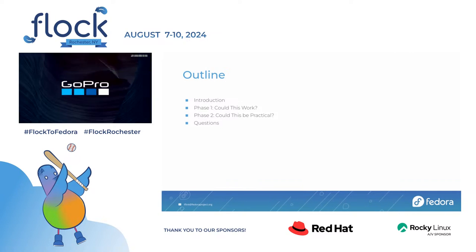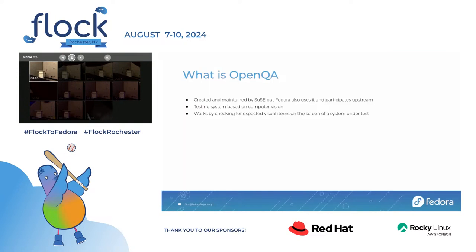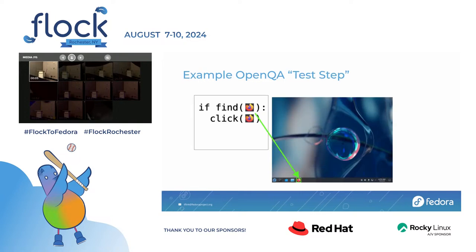What I'm looking to do is give a bit of introduction about how this got started, talk about whether this could actually work and be practical, and leave time at the end for questions. openQA is a system created and still maintained by the SUSE folks, but Fedora has come to rely very heavily on it and we also participate upstream. openQA is a system primarily based on computer vision — the real core work loop it does is look for a little image in a big image and make decisions based on whether it does or doesn't find that image.